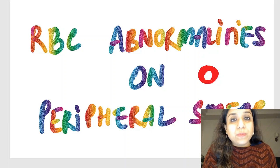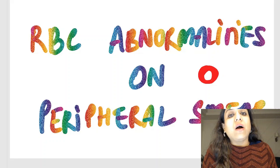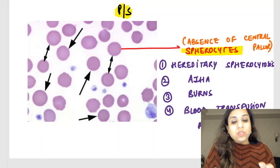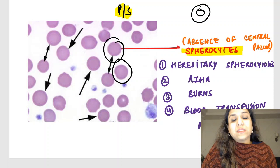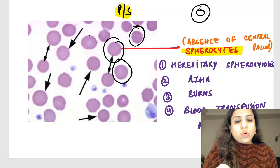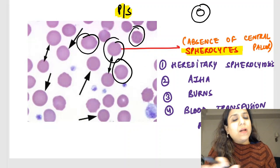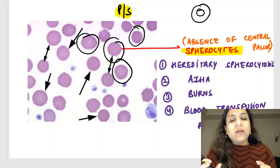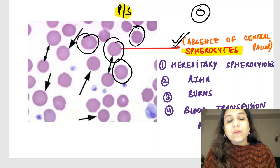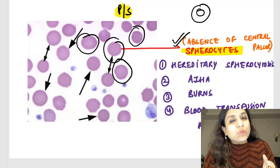In this section we are going to discuss the RBC abnormalities on a peripheral smear. When a pathologist sees a peripheral smear, what are the things which I can see in the RBCs? First, let us see this image. Can you appreciate these red blood cells? Do you think these RBCs are normal? Whenever I draw a normal RBC, it has a central one-third pallor. Can you see any pallor in these RBCs? Notice all of these RBCs — I don't see any pallor. They are consistently pink or purplish. There is no pallor and also there is a reduction in size and they are quite rounded. So these cells are called spherocytes.